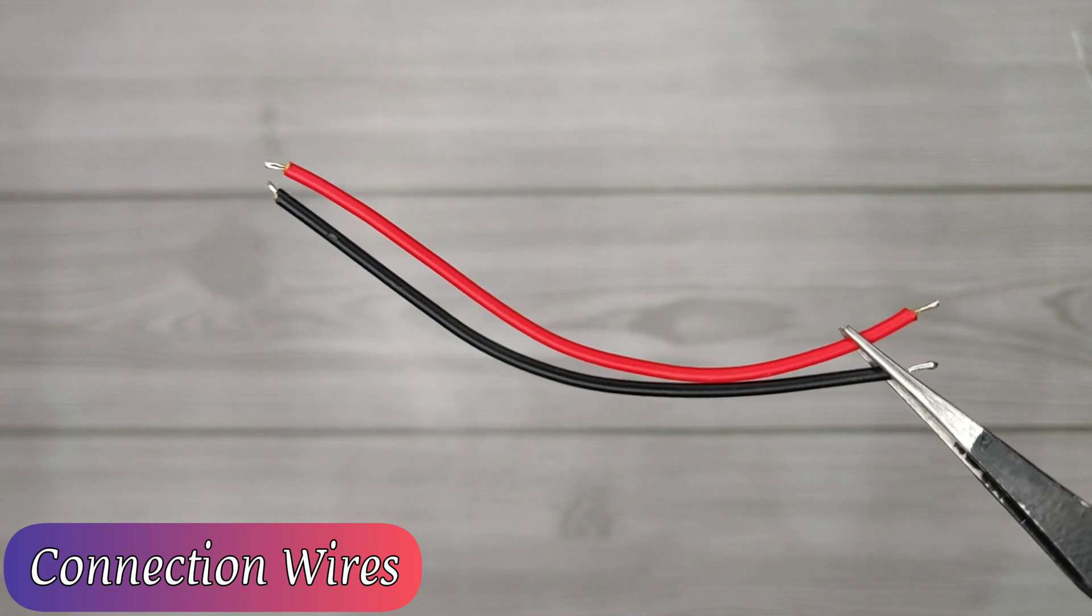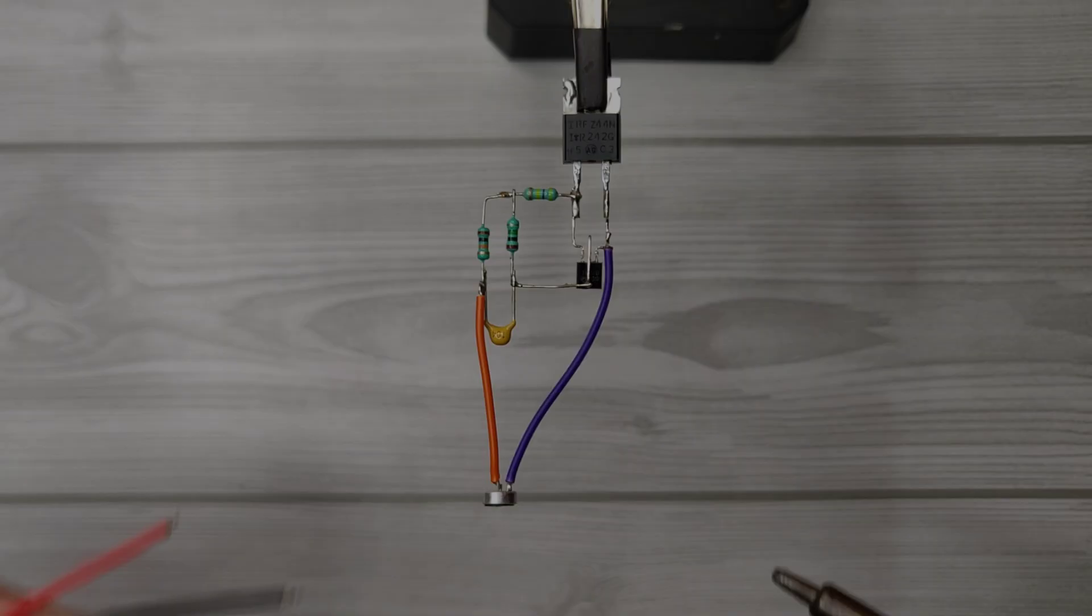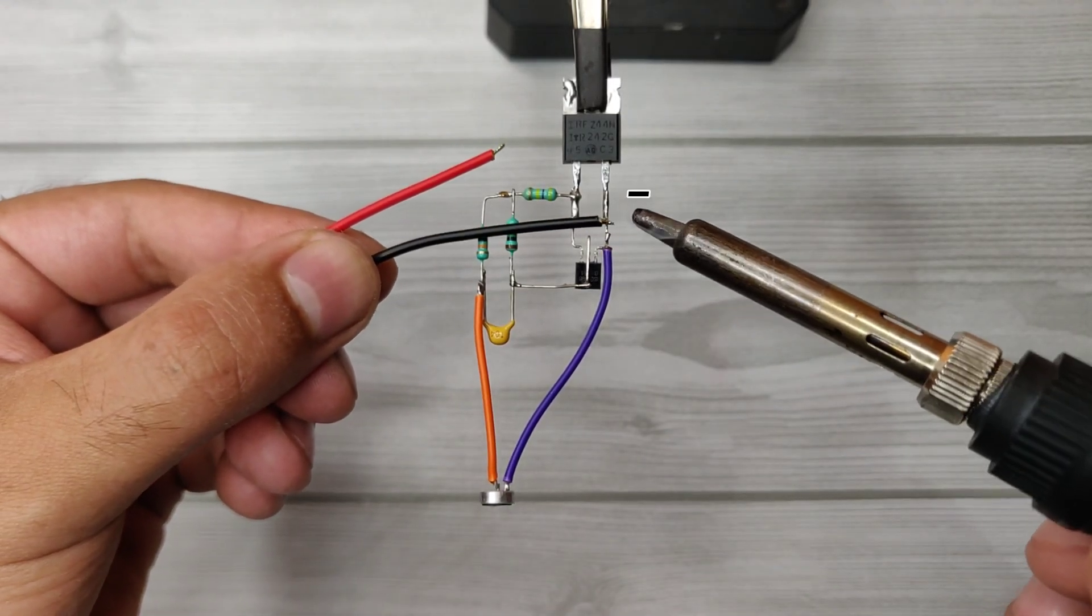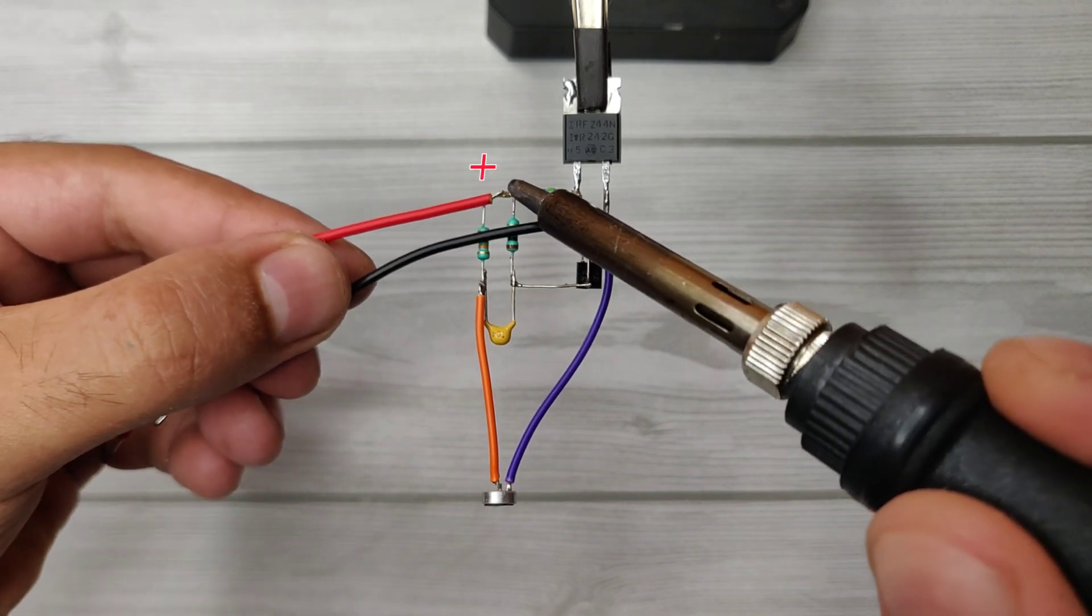Use connection wires for DC input. Solder negative with MOSFET source pin and positive with these resistors.